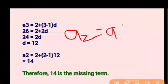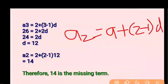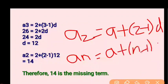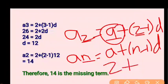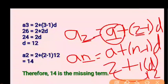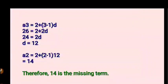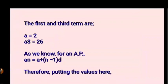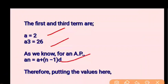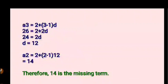To find A2, we write A2 = A + (2−1)D = 2 + 1×12 = 2 + 12 = 14. So A2 = 14, which is our missing term. The approach is simple: form an equation, find the common difference, then find the missing term easily.